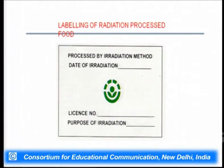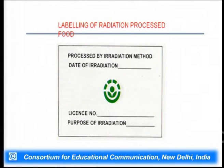After complete radiation processing, manufacturers must mention the following information on the product wrapper: that the food was processed by irradiation, the date of irradiation, the green-color standard Radura logo, the license number, and the purpose of irradiation.